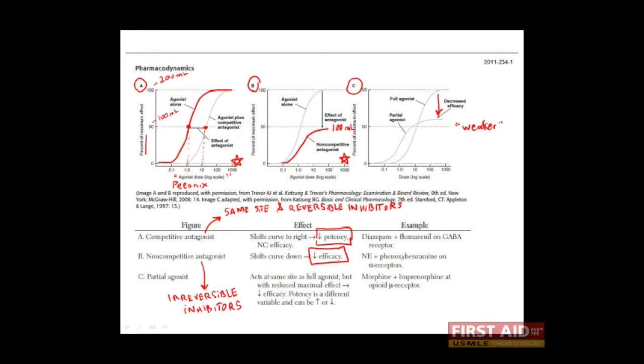Finally, note that partial agonists can actually increase, decrease, or leave the potency unchanged. A good example of a common partial agonist is buprenorphine. Buprenorphine has the same effect on the opioid mu receptor as does morphine, but is less efficacious than morphine itself. As you can see here, a common example of a noncompetitive antagonist is phenoxybenzamine, and of a competitive antagonist, flumazanil.